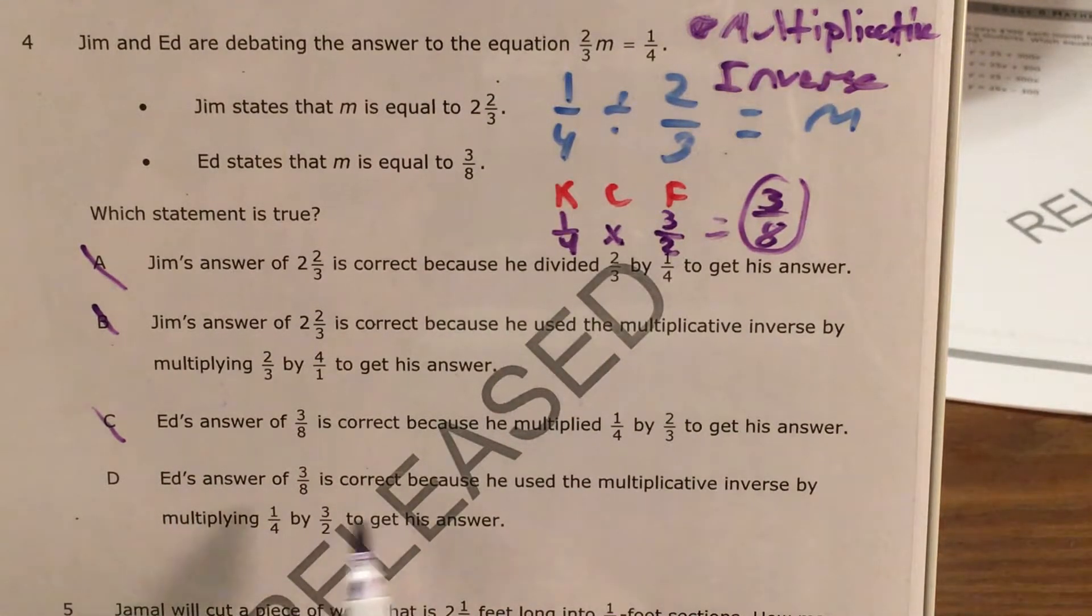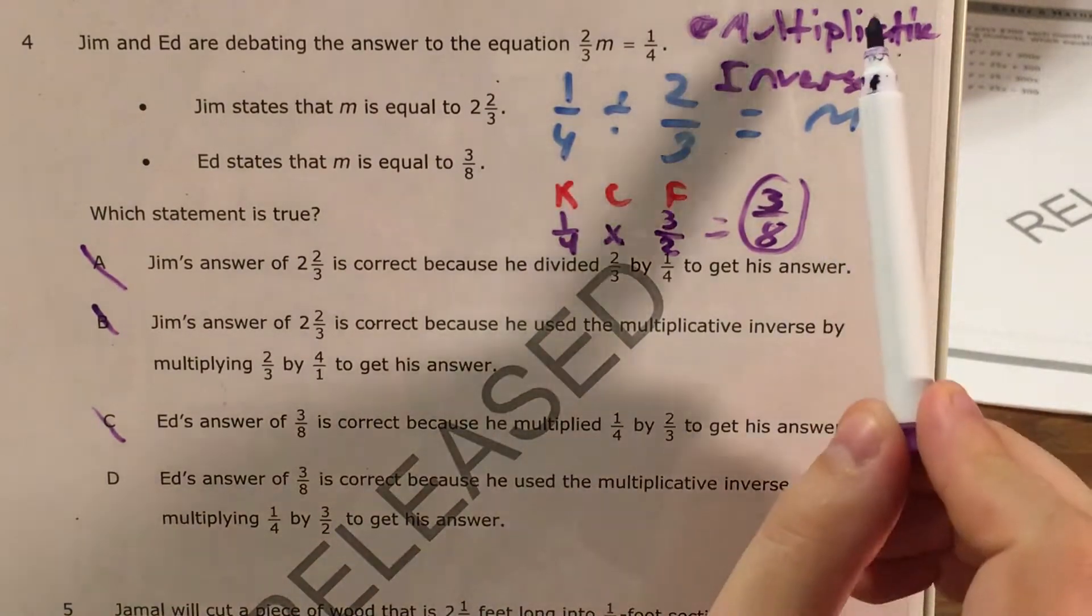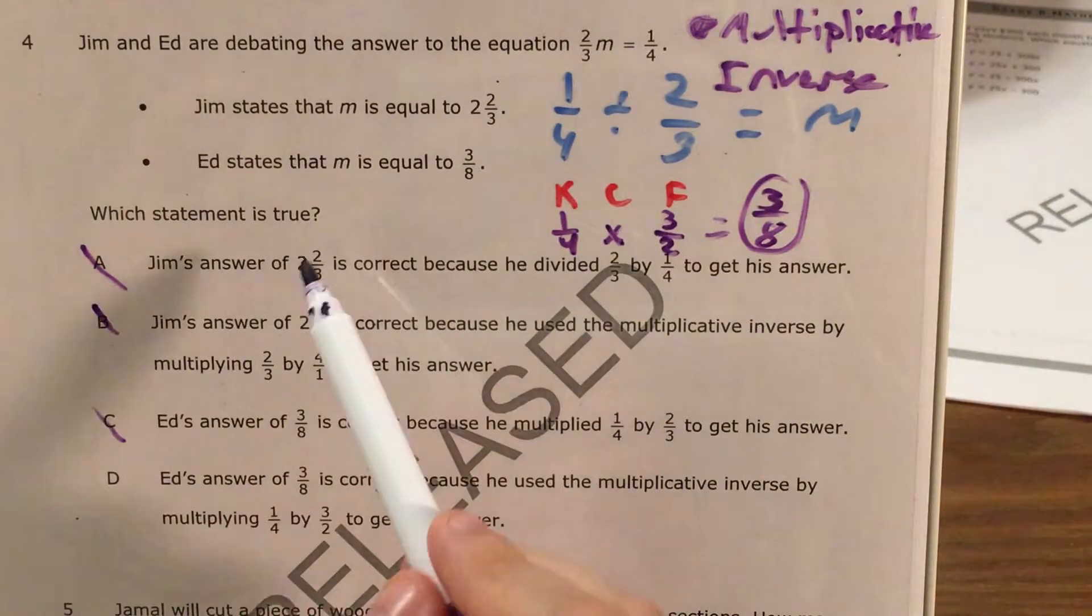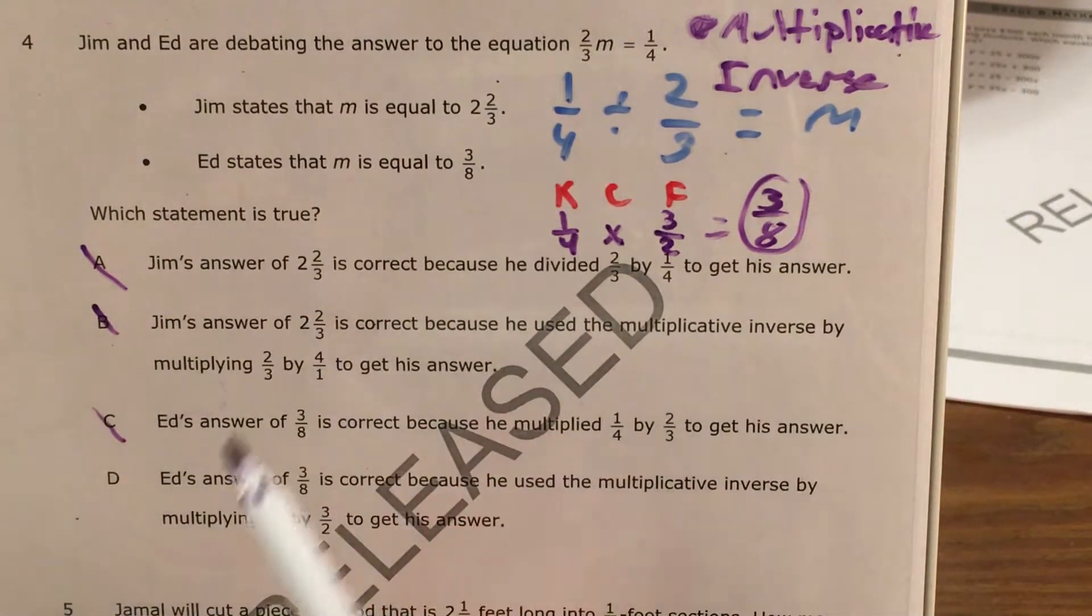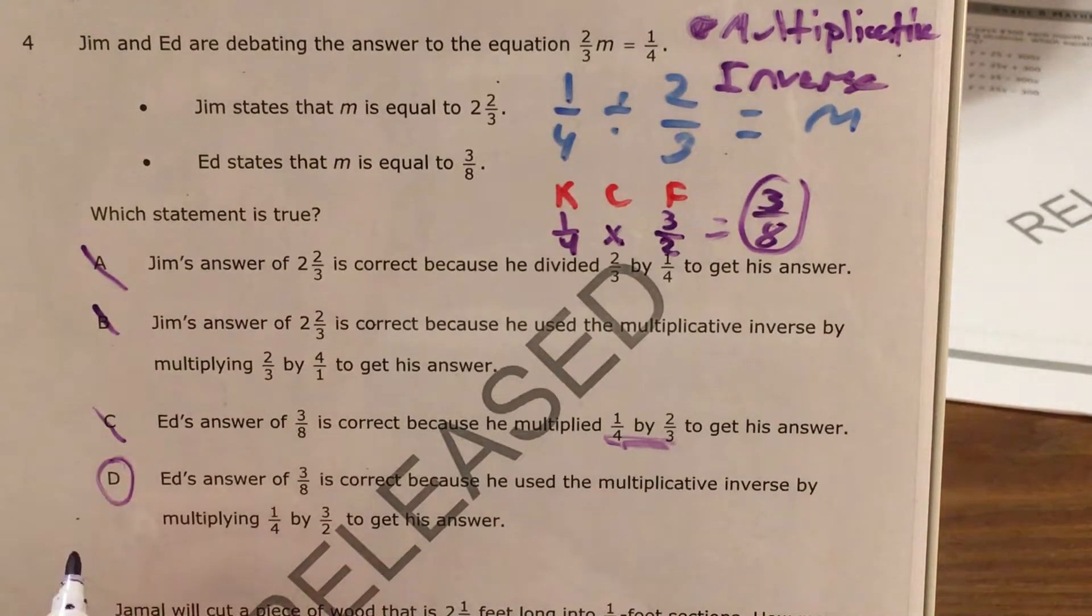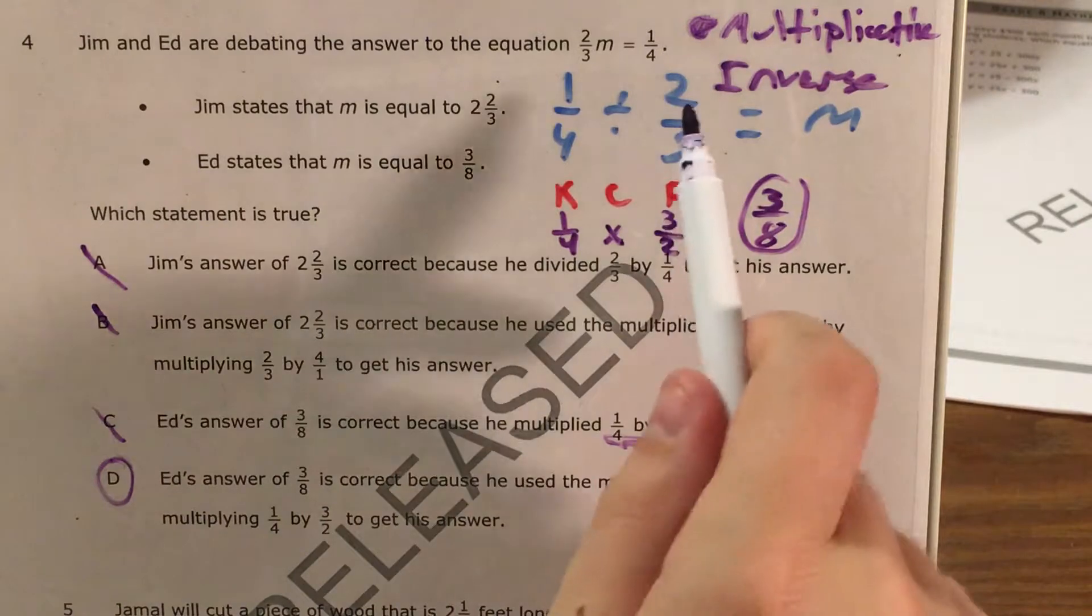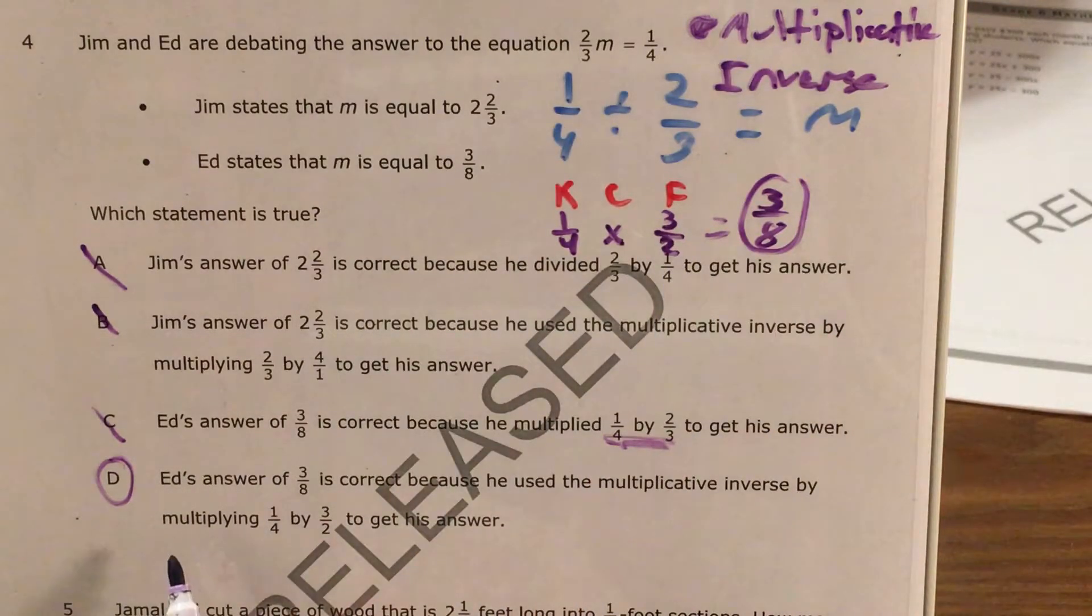Ed's answer of three-eighths is correct because he used the multiplicative inverse, okay? By multiplying one-fourth by three-halves, that looks right to get his answer. Alright, so a and b can't be it because the answer was wrong. c can't be it because they didn't show the right numbers that we multiplied. So our only answer left is d because Ed's process is exactly our process. Ed used the multiplicative inverse, changed two-thirds to three-halves, and multiplied one-fourth by three-halves to get his answer.